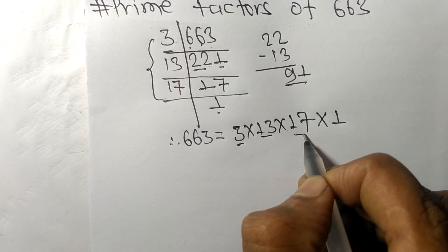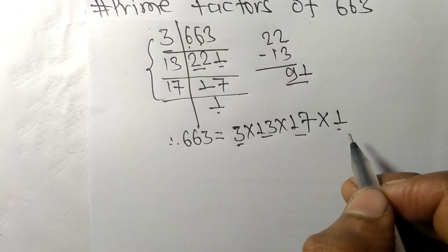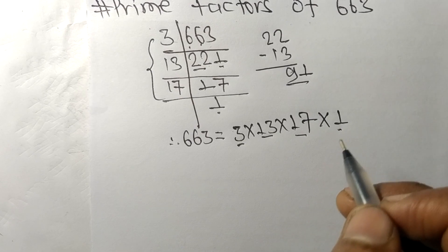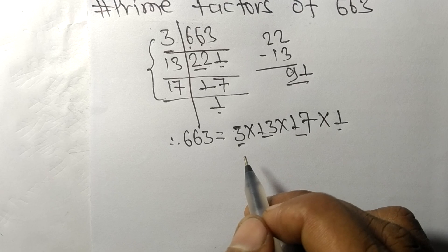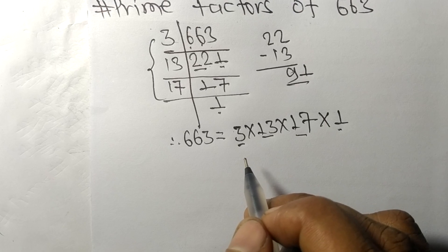So 3, 13, 17, and 1 are the prime factors of 663. So this much for today and thanks for watching.